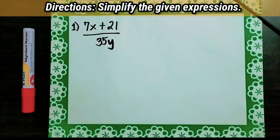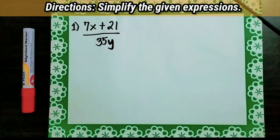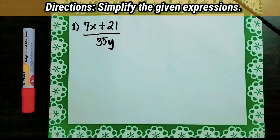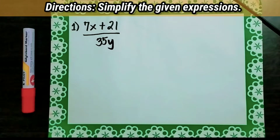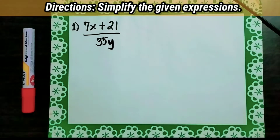Let's have number 1. Simplify 7x plus 21 over 35y. The first step is to factor the numerator and the denominator completely. Since our denominator is already simplified, let's simplify the numerator. To simplify this, let's factor 7x plus 21 using common monomial factor.